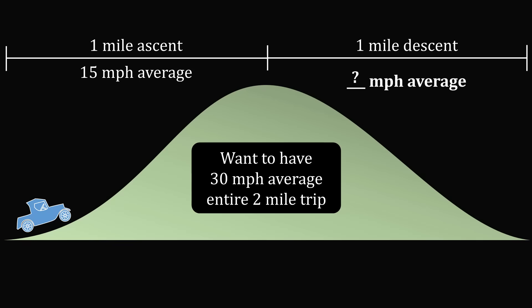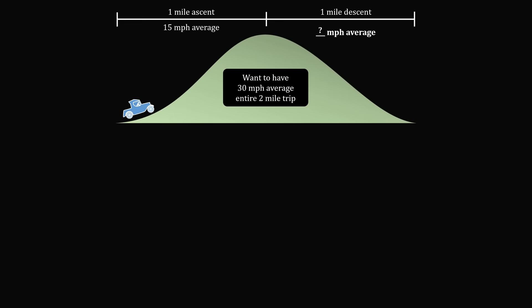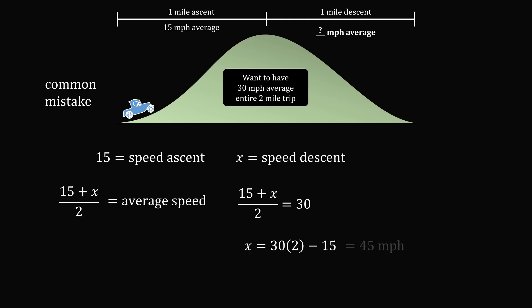So, how do we solve this problem? Let me first go over most people's instantaneous reaction, which is a common mistake. Most people think about it like this. You have 15 miles per hour as the speed of the ascent, and let's say x is the speed of the descent. We want the average speed, so let's take the average of these numbers as a simple arithmetic average. We will take one-half of 15 plus x, and we want that to be equal to the average speed of 30. So, 15 plus x divided by 2 needs to be equal to 30. So, at first, this seems like a very simple riddle. There's only one problem. This is not the correct answer!